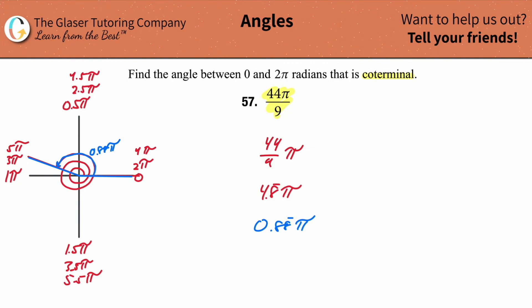You might want to know the fraction. So what you can do is you can take out your calculator and you can convert that decimal 0.88. Just plug it into your calculator. Convert it into the fraction. And that works out to be 8 ninths now. 8 ninths pi.